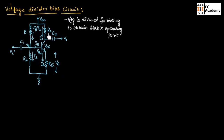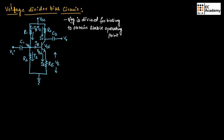Here, Rc is the output resistance connected across the collector terminal of the transistor. Re is the emitter resistance, which is used for stability. R1 and R2 are the voltage divider bias resistors. Vce is the collector-to-emitter voltage, and Vbe is the base-to-emitter voltage, which is 0.7 volts. Vb is the base voltage.